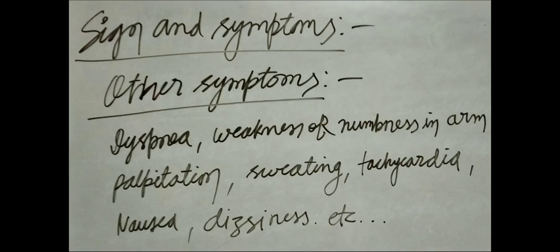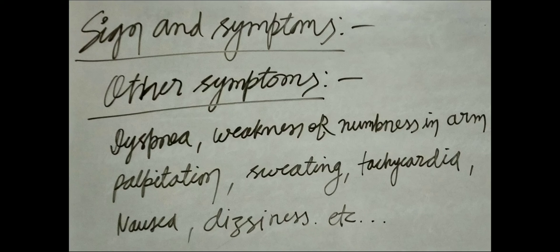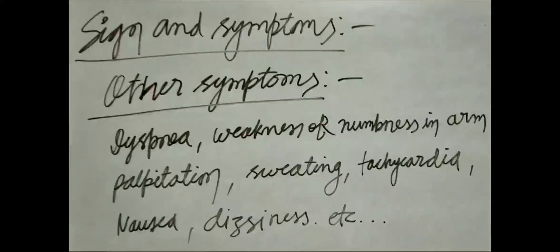Other symptoms of Angina Pectoris include Dyspnea, which is difficulty in breathing or shortness of breath. Weakness or numbness in the left arm — numbness means a pins and needles sensation in a particular limb. Next is Palpitation, where the heart is beating too hard and too fast; a person can notice their own heartbeats at the chest, throat, and neck region. Next is Sweating, Tachycardia — which means heart beats more than 100 times per minute — Nausea, and Dizziness, which means feeling lightheaded, woozy, or unbalanced.